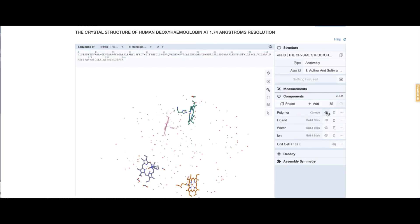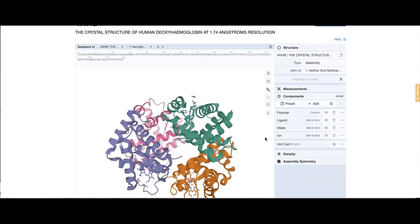So for example, I can hide the polymer, show the polymer. Let's hide the waters for simplicity's sake.